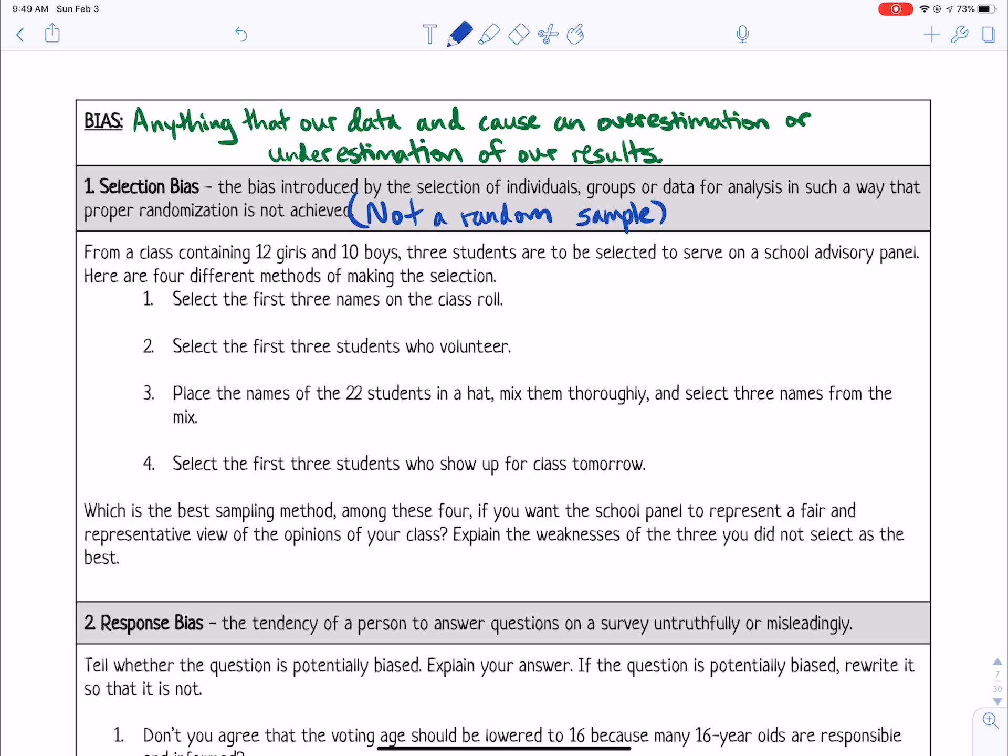So some examples are, from a class containing 12 girls and 10 boys, three students are to be selected to serve on a school advisory panel. Here are four different methods of making the selection. Select the first three names on the class roll.